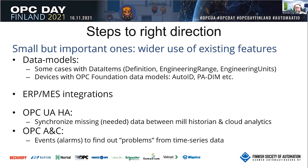In some cases we have data items with definition, engineering ranges, minimum, maximum, and engineering units implemented according to the OPC UA Foundation specification. And then we have devices — auto ID, process automation, device information model — those are now coming, so we are starting to use those.